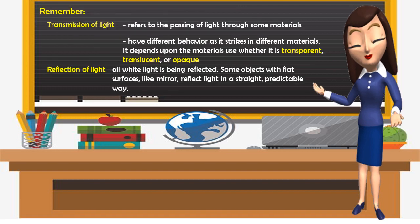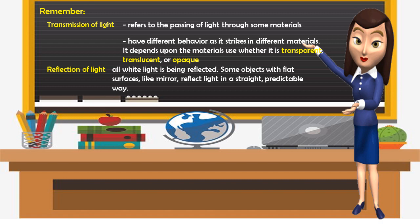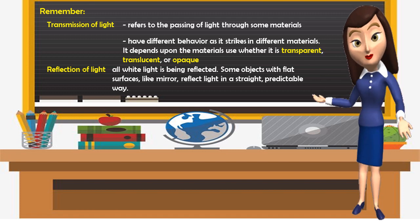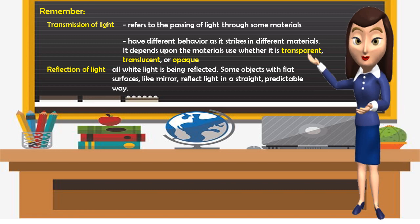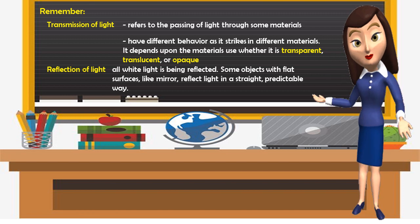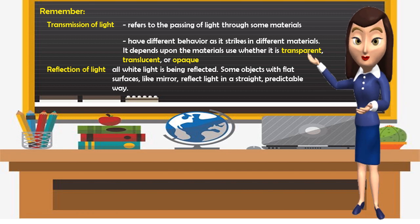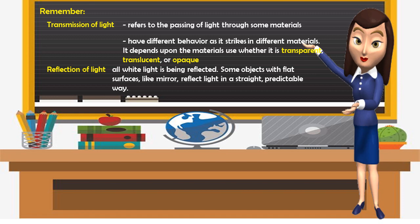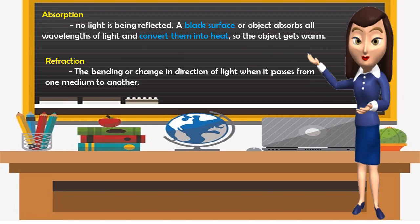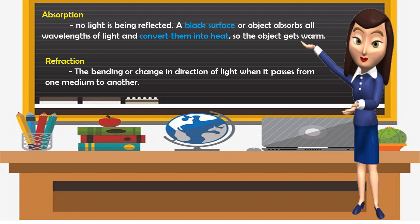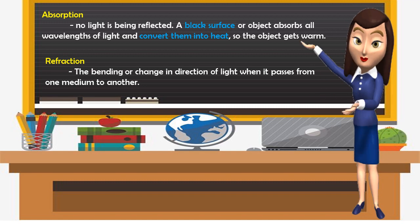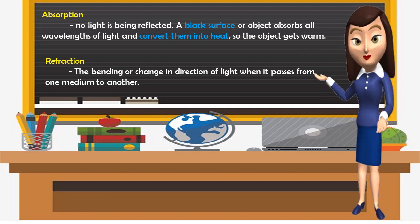Remember class: transmission of light refers to the passing of light through some materials. Transmission of light has different behaviors as it strikes different materials — it depends upon the material used, whether transparent, translucent, or opaque. In reflection of light, all white light is reflected; some objects with flat surfaces like a mirror reflect light in a straight and predictable way. Absorption: no light is reflected — a black surface or object absorbs all wavelengths of light and converts them into heat, so the object gets warm. Refraction is the bending or change in direction of light when it passes from one medium to another.